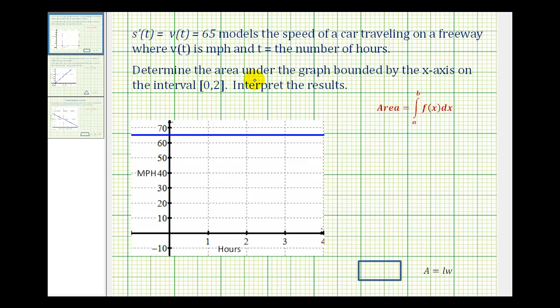We want to determine the area under the graph bounded by the x-axis on the interval from zero to two, and then interpret the results. Here we have the graph of our velocity function, v(t) = 65 in blue, and we want to determine the area under this curve bounded by the x-axis on the interval from zero to two.